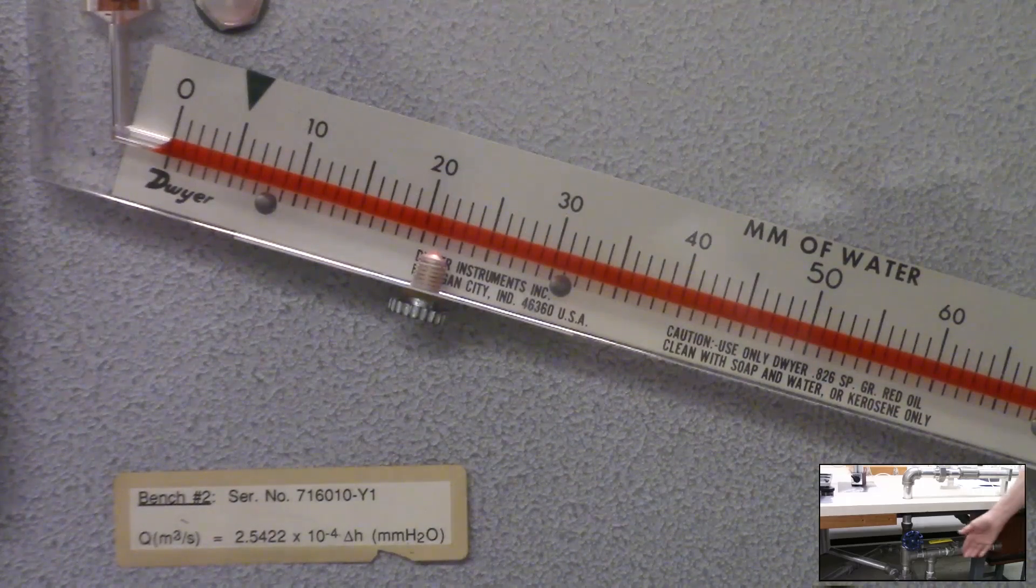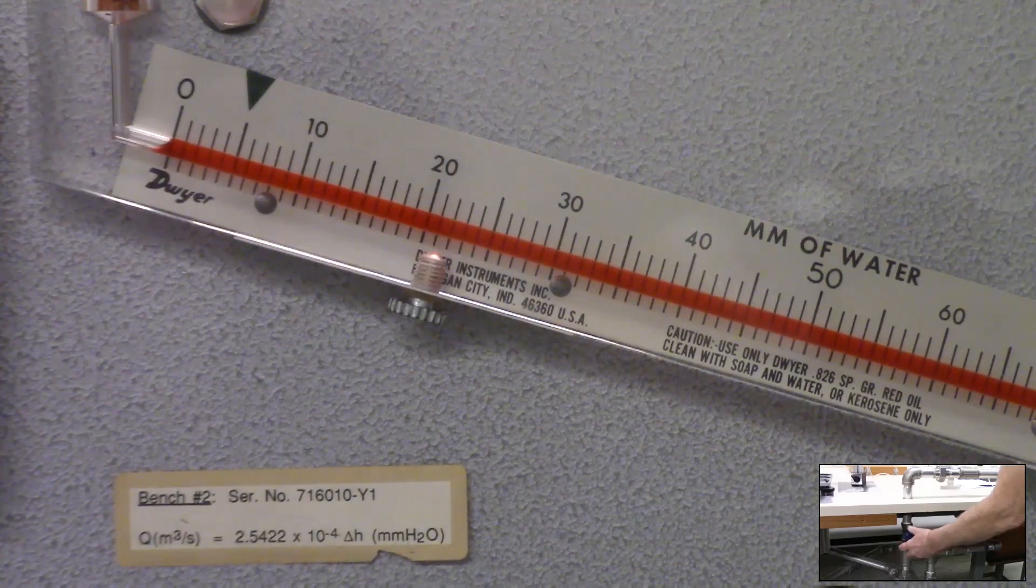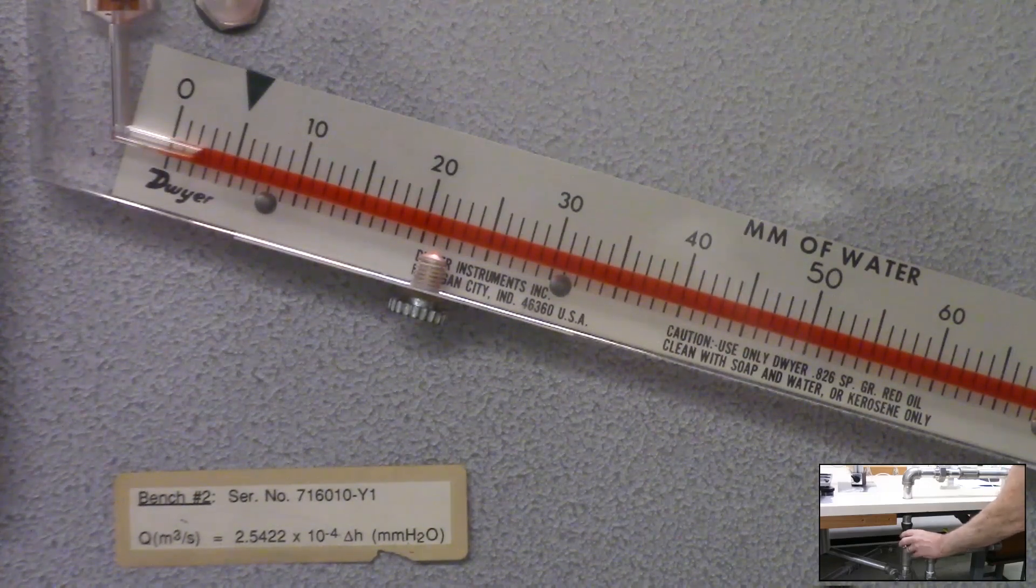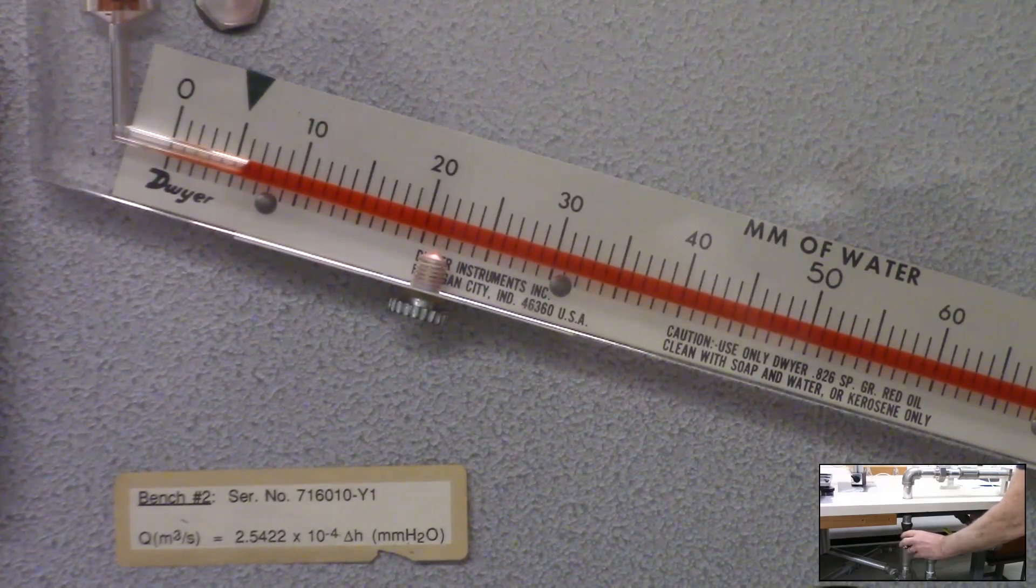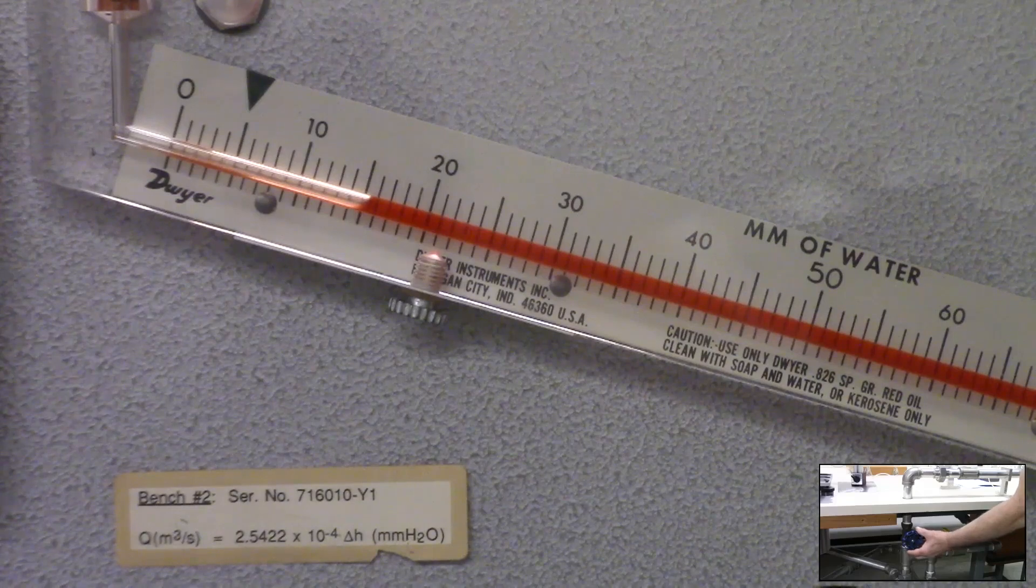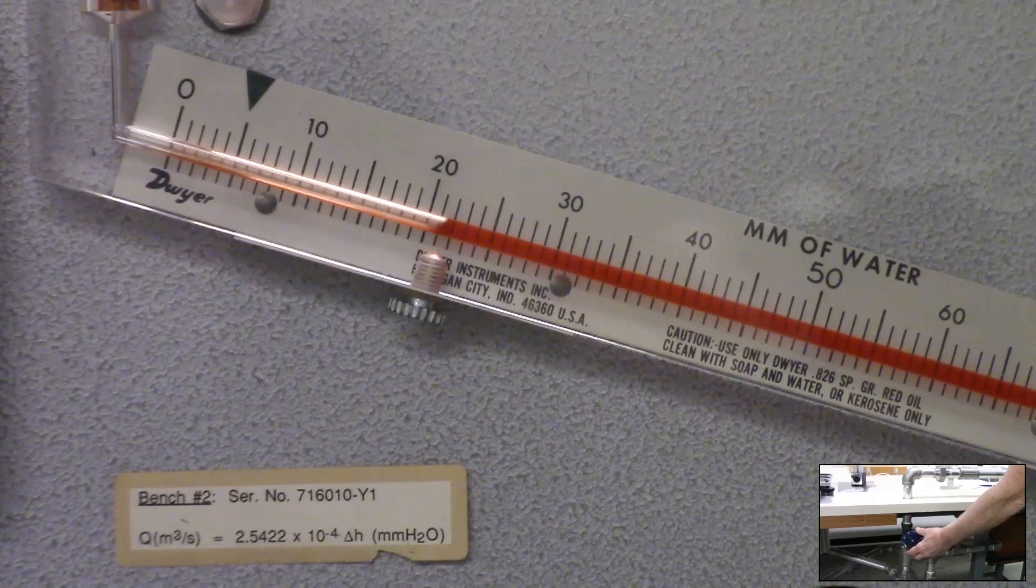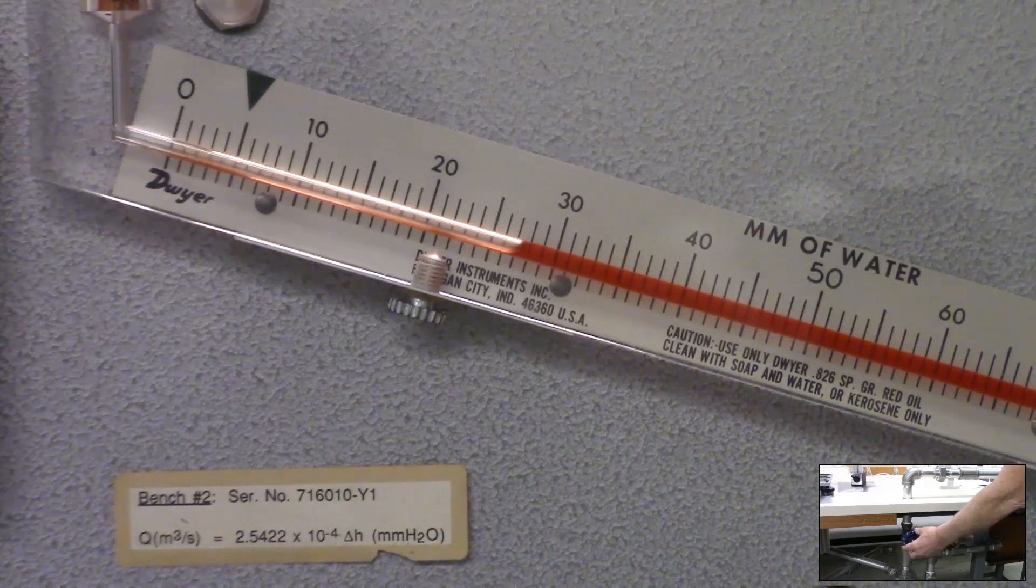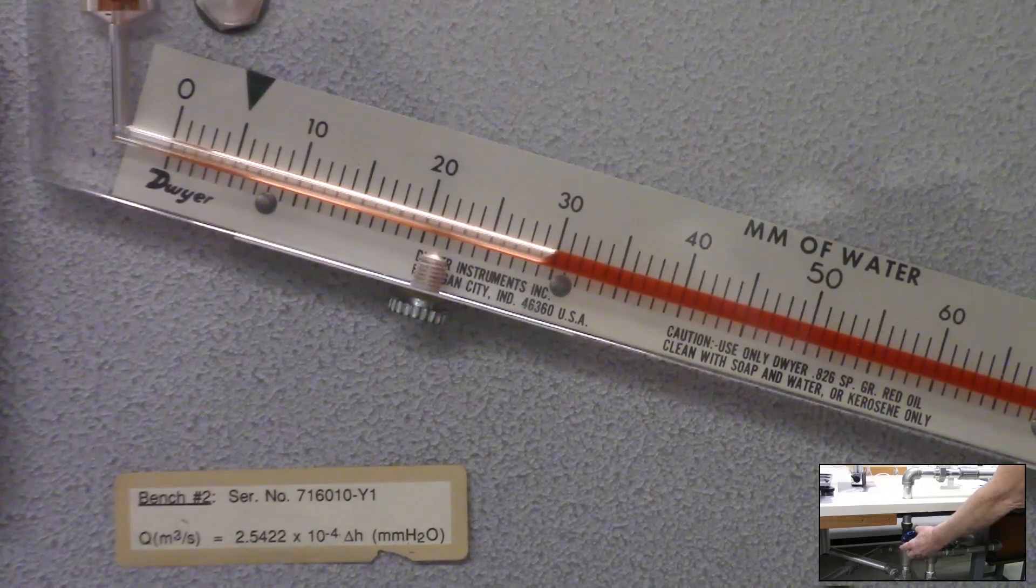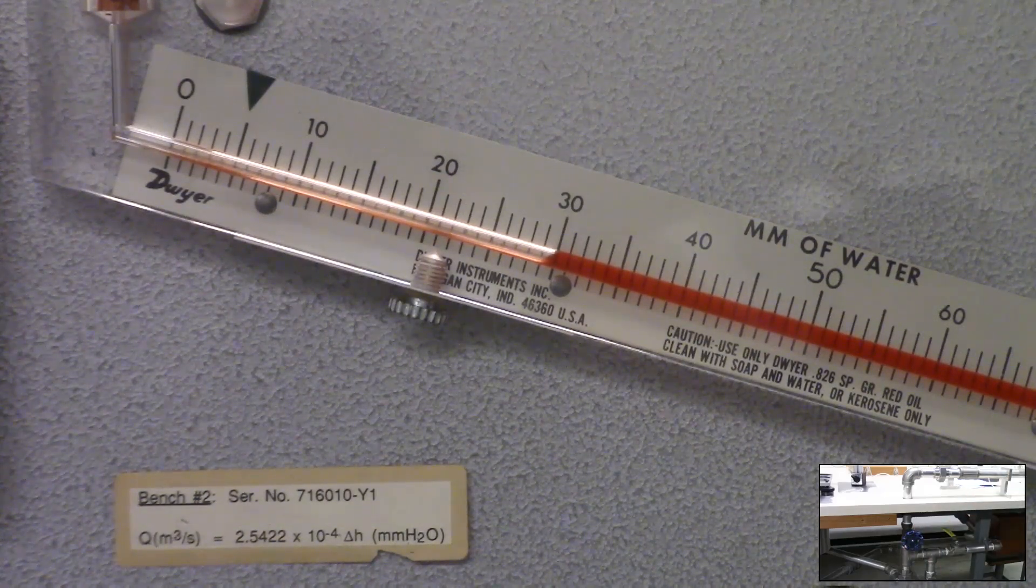All right, I've got the compressor running now. I'm going to close the bypass valve and start diverting flow through the pipe circuit. You can see the manometer reacting as I increase the flow using this gate valve here. I'm going to adjust it to 30 millimeters of water. I'll get that adjusted and let it sort of settle out to a steady state. All right, that looks pretty good. So we've got our flow rate set.